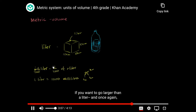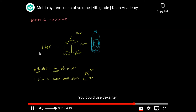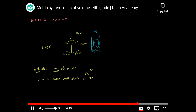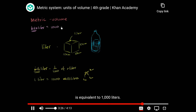If you want to go larger than a liter — and you could use all the metric prefixes like decaliter or hectoliter — but the one most typically used is the kiloliter. As the prefix kilo implies, this is equivalent to 1,000 liters.